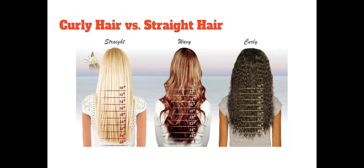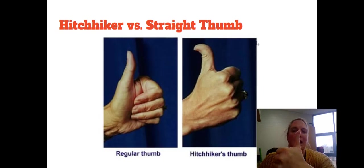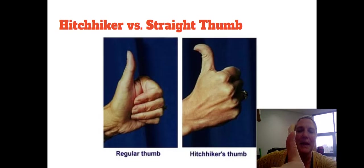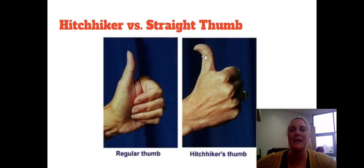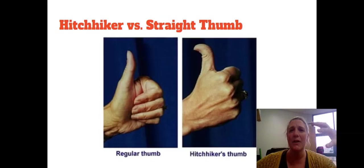We're going to skip PTC taster till the end. For hitchhiker's thumb versus straight, take your thumb and bend it back. Mine is a straight thumb. A lot of people's thumbs will go back some, but a true hitchhiker's thumb, as you can see in the picture, is almost a 90-degree bend backwards. If you were to put it against a line on paper, it would be bending back almost touching that line. There can be a variance of hitchhiker's thumb, so if your thumb bends back noticeably, you can say hitchhiker's thumb.